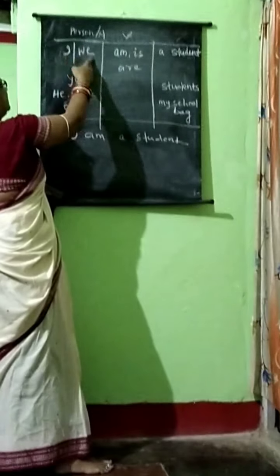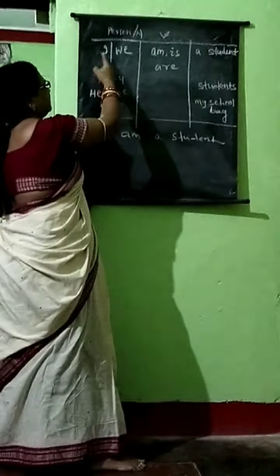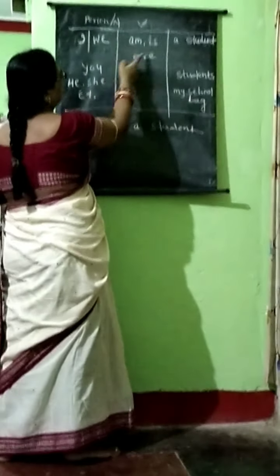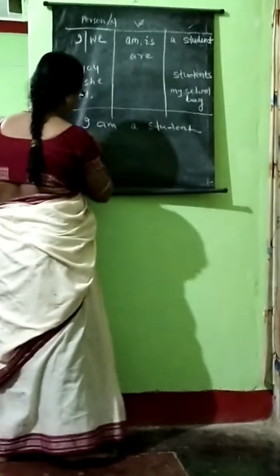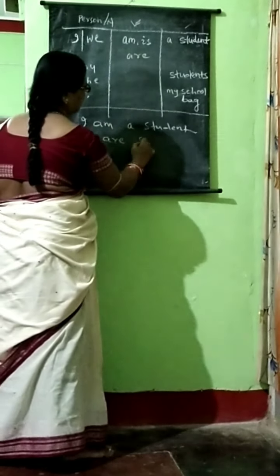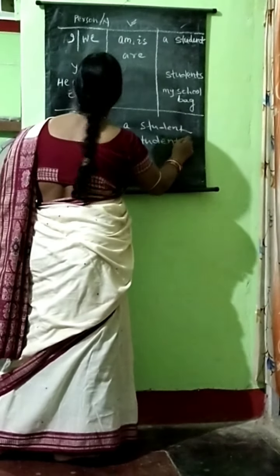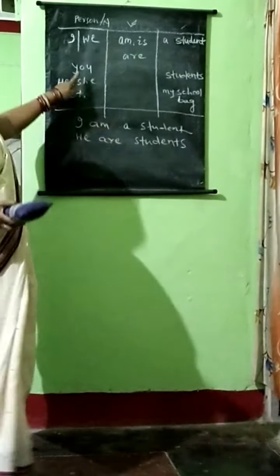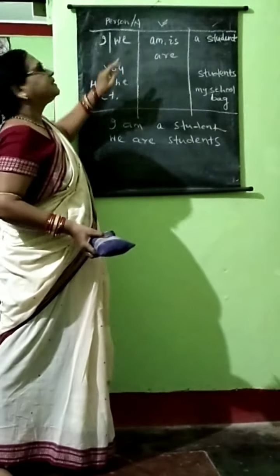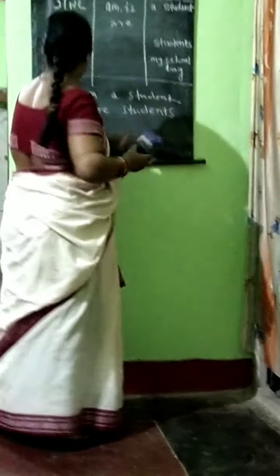'We' is the plural form of 'I' — first person plural — so: we are students. 'You' is the second person singular number: you are a student.